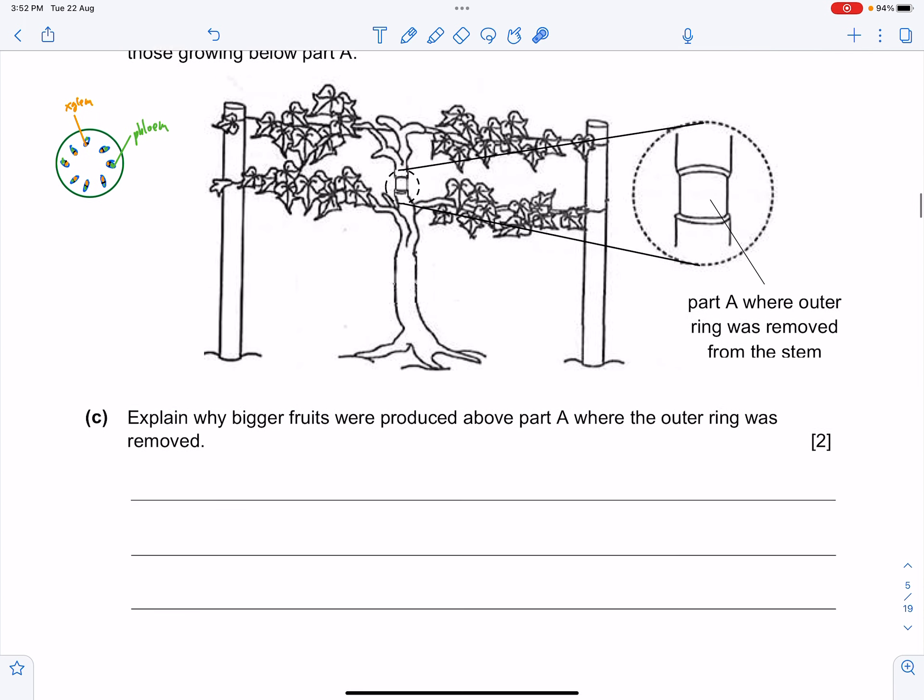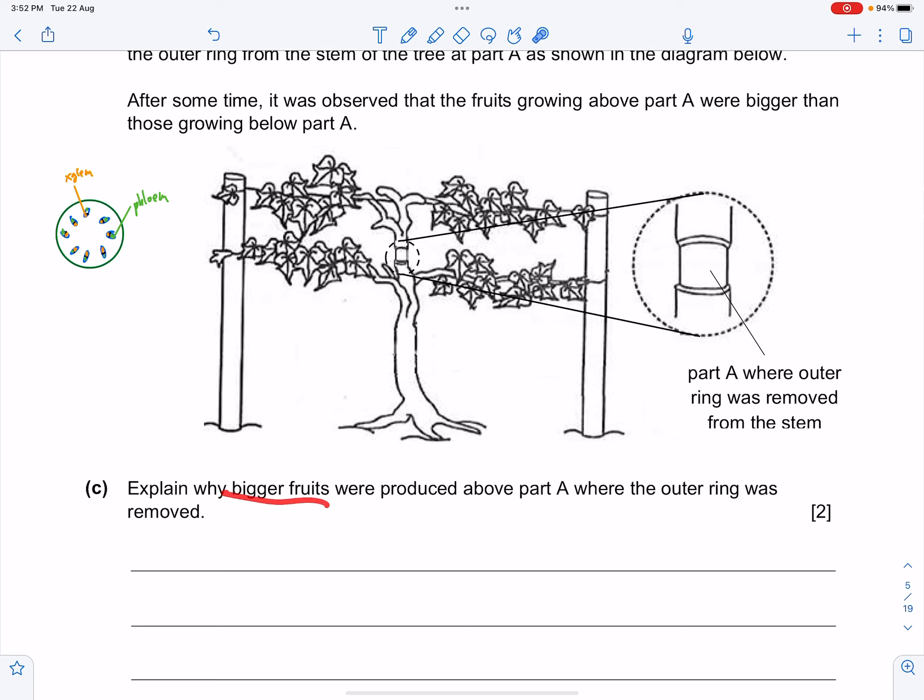Now this is very important. Explain why bigger fruits were produced above part A where the outer ring was removed. This is where most students will have issues answering plant transport questions. Now we know that the cut was made over here. How do we make reference?